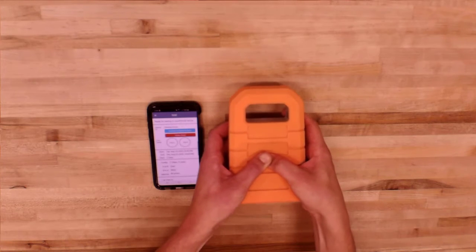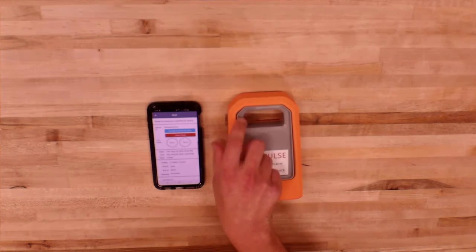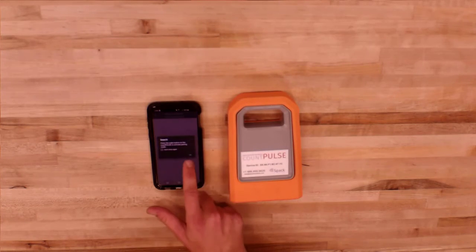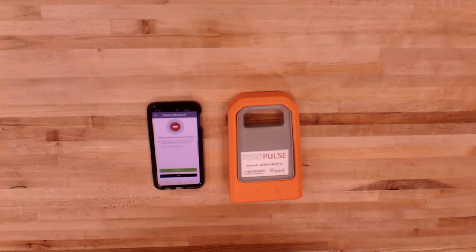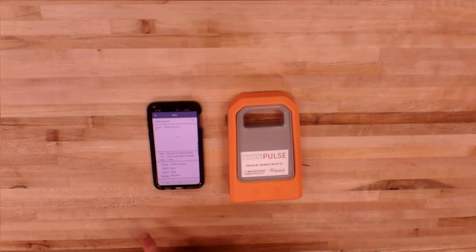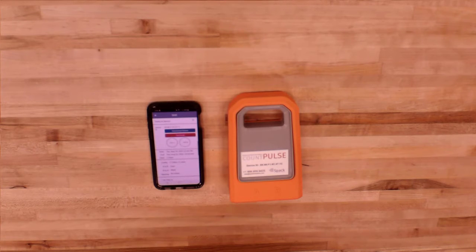To sync the study to the device, press the button on the back of the Count Pulse to activate the Bluetooth signal. Then tap Connect to Device to Sync in the app to bring up the list of available Bluetooth connections, and select your Count Pulse.